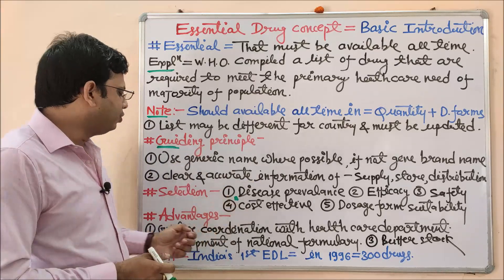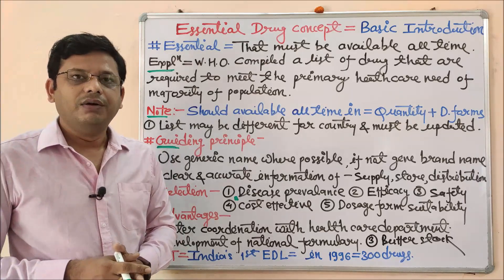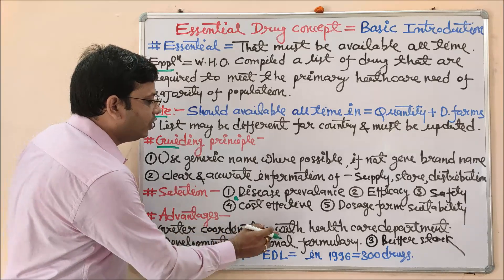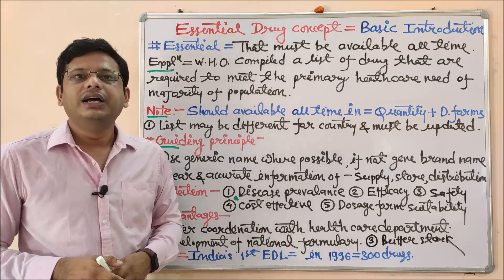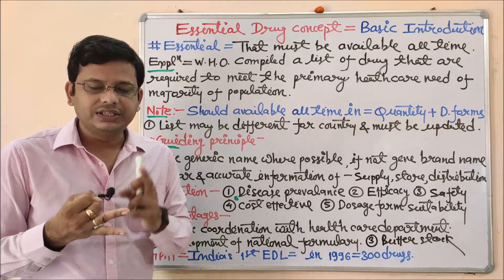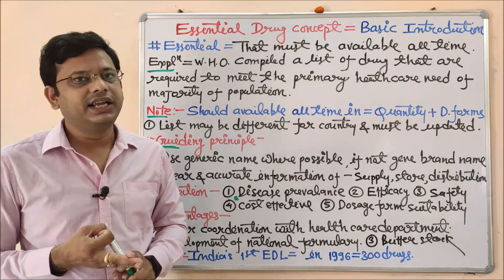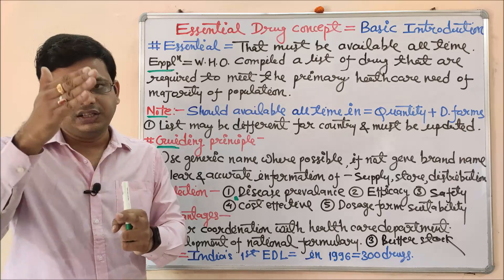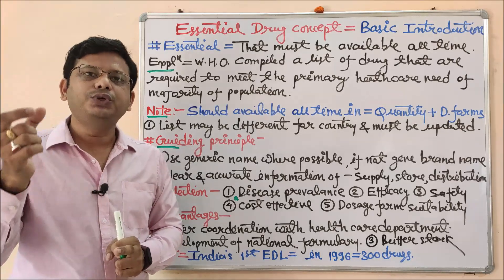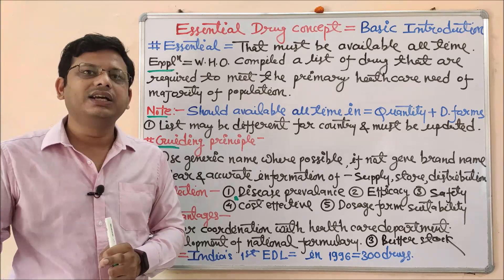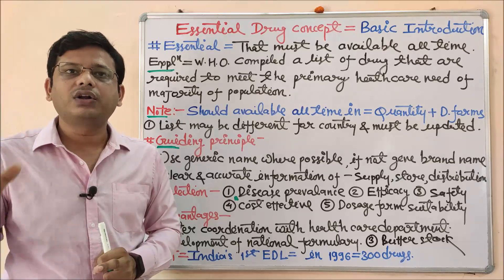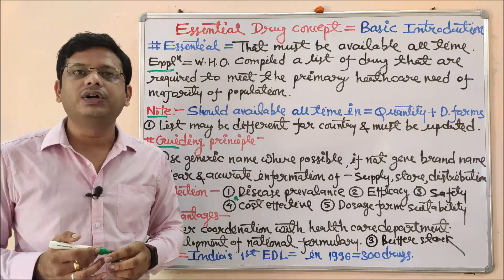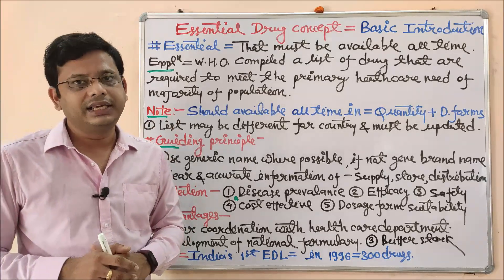Now, what are the advantages of the essential drug concept? First, it generates coordination between healthcare departments — primary healthcare, district healthcare, state healthcare, and All India healthcare departments. There should be proper coordination among these organizations so that distribution of medicines takes place properly. If the government issues some quantity of drug but it does not reach the proper desirable place, that is a failure of communication. This list provides a proper guideline that a particular drug must be available in all healthcare departments.